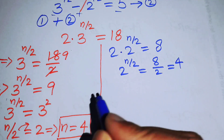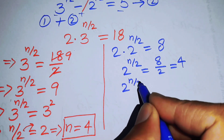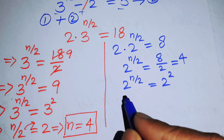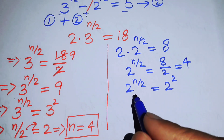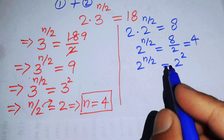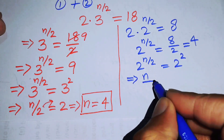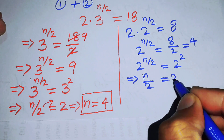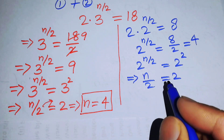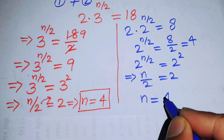We write 4 as 2 squared. The bases on both sides are the same, so their exponents must be equal: n over 2 equals 2. Moving the 2 to the right-hand side gives n equals 4.